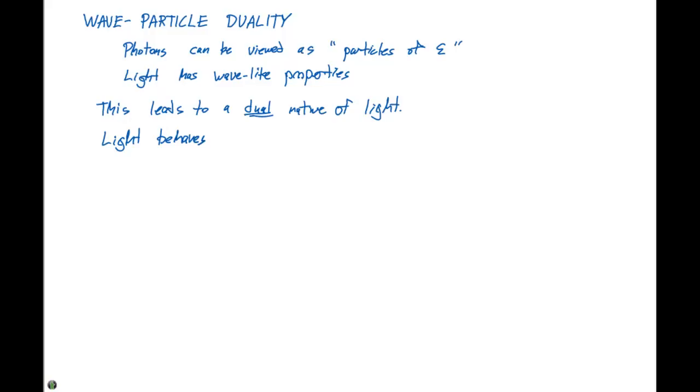This leads to a dual nature of light. We can say that light behaves as both a wave and a particle. This was a pretty puzzling thought for most scientists at the time who were trying to define some of these properties.